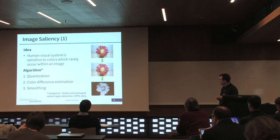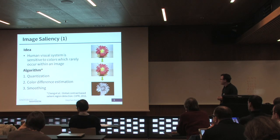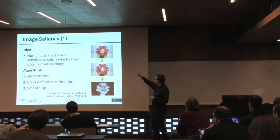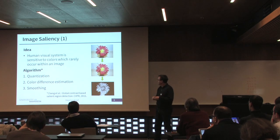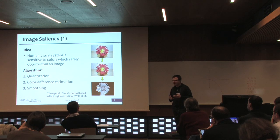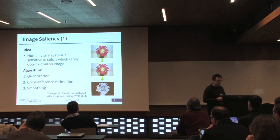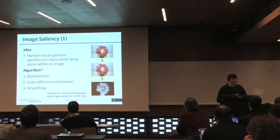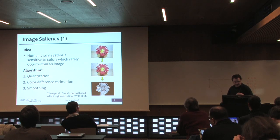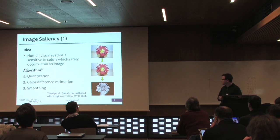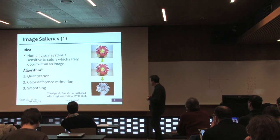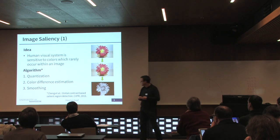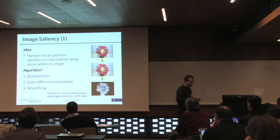The idea is inspired by work from Cheng presented two years ago. We have an image — for example, a flower in the upper part. The first step is to reduce the overall number of colors; this step is used only to get much better processing times. Later we compare the color differences of this quantized image and get a saliency map, shown in the lower part where bright values indicate high saliency.